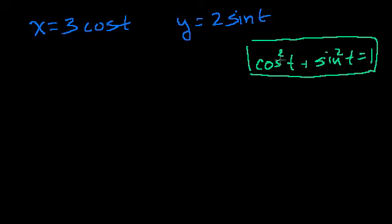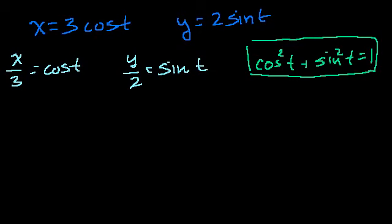But if we could somehow replace this cosine squared with some expression in x and replace the sine squared with some expression in y, we'd be done. And that shouldn't be too hard. We can rewrite this. We can set cosine of t equal to something in x, and we could set sine of t equal to something in y. So we divide both sides of this equation by 3, you get x over 3 is equal to cosine of t. And if you divide both sides of this equation by 2, you get y over 2 is equal to sine of t.